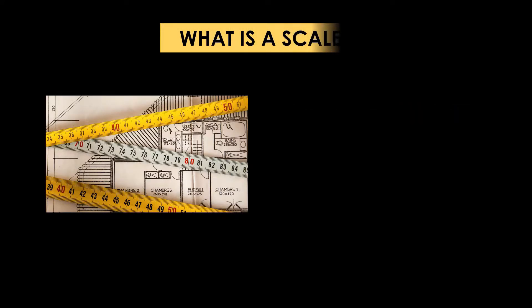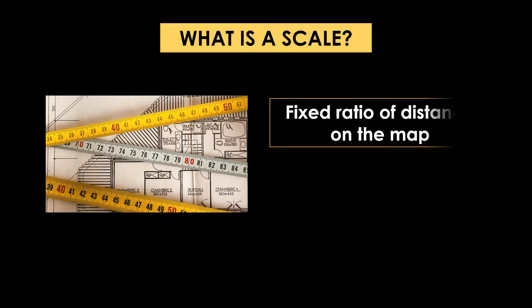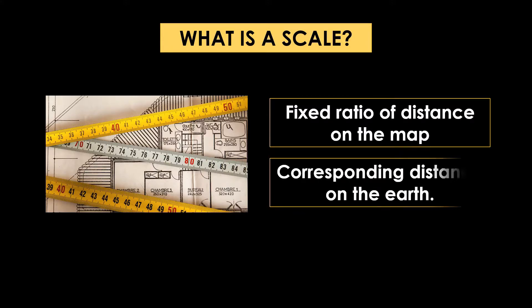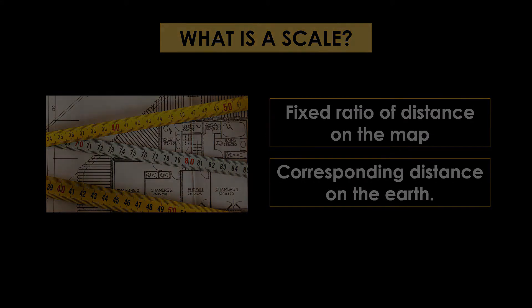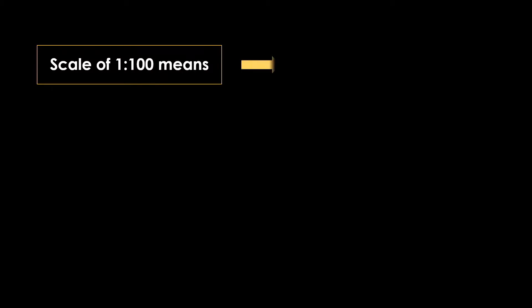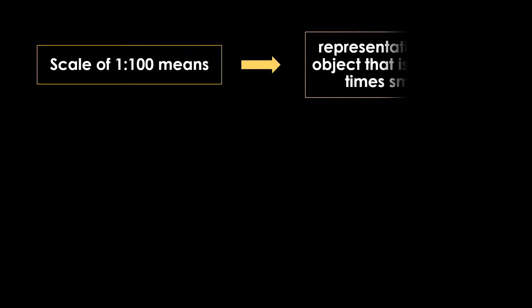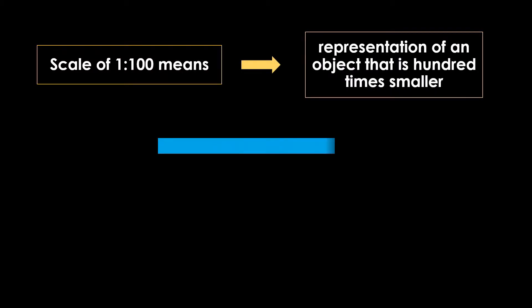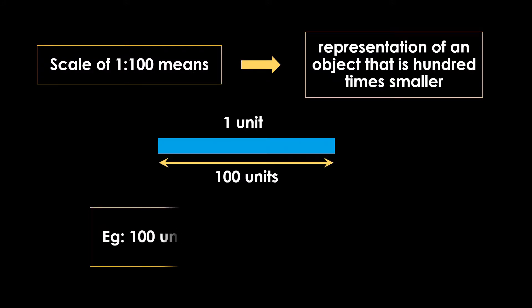What is scale? Scale is the fixed ratio of distance on the map to the corresponding distance on the earth. A scale of 1 in 100 means representation of an object that is 100 times smaller. For example, 100 units are represented as one unit in the plan.